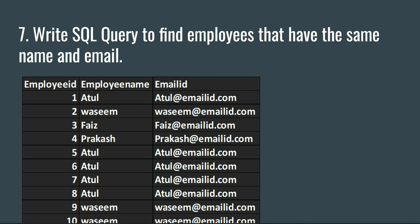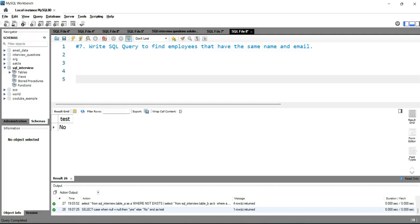The simple trick that will give us the output is GROUP BY. We'll use GROUP BY on two columns — name and email — and it will give us the list of employees that have the same name and email address. Let's go to our workbench.